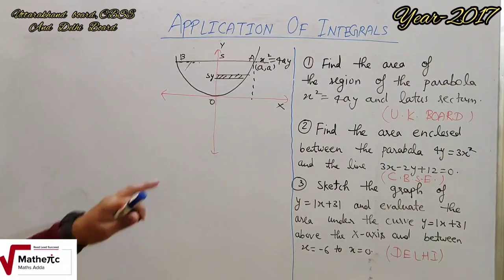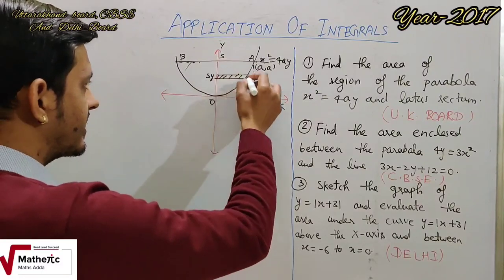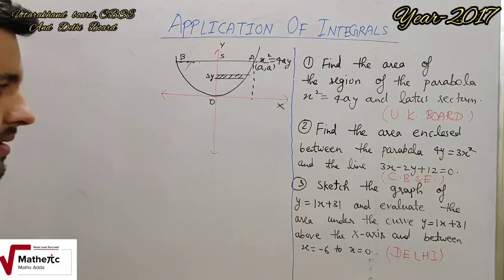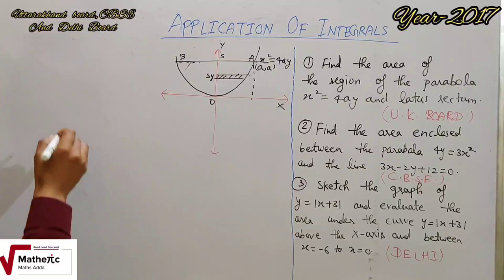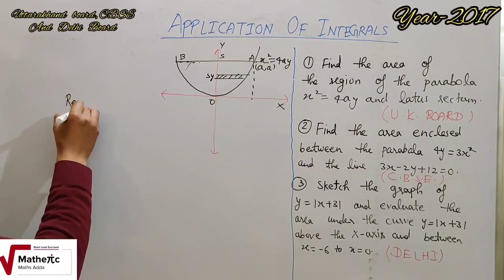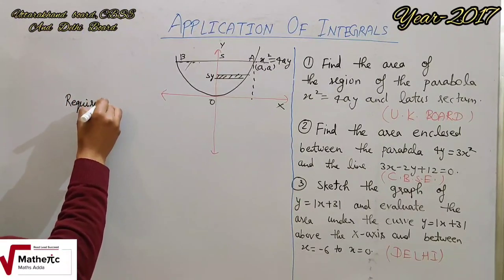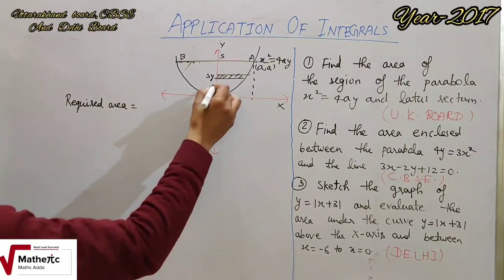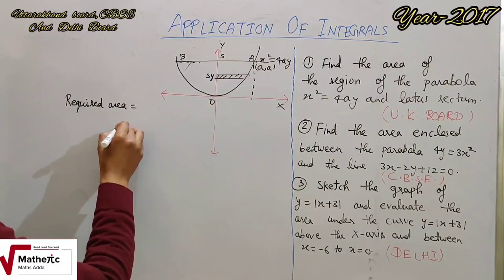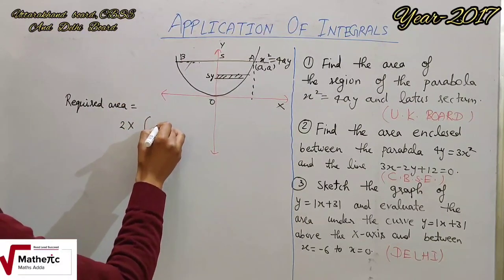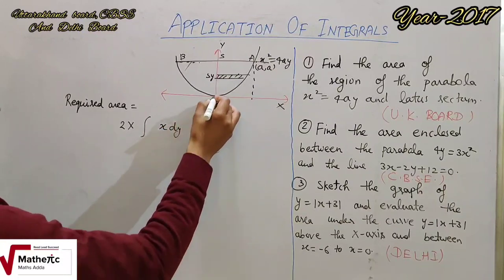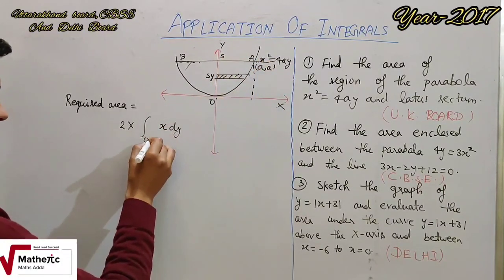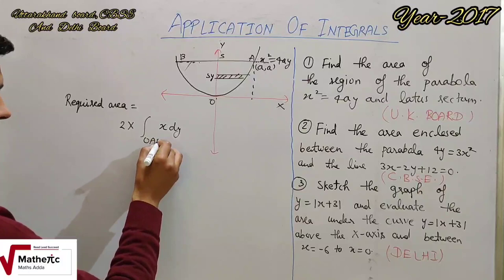We have to take a portion of this area, take it twice, and then find the whole area. So required area — required area is equal to one area taken double, using the formula x dy, corresponding limits 0 to a.